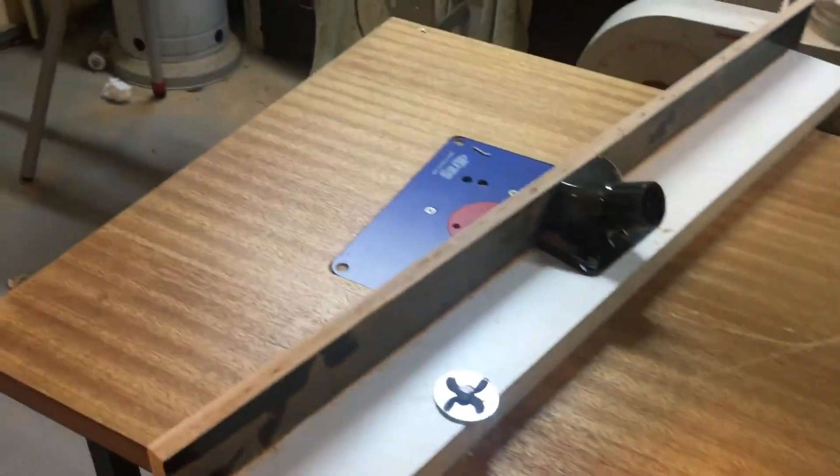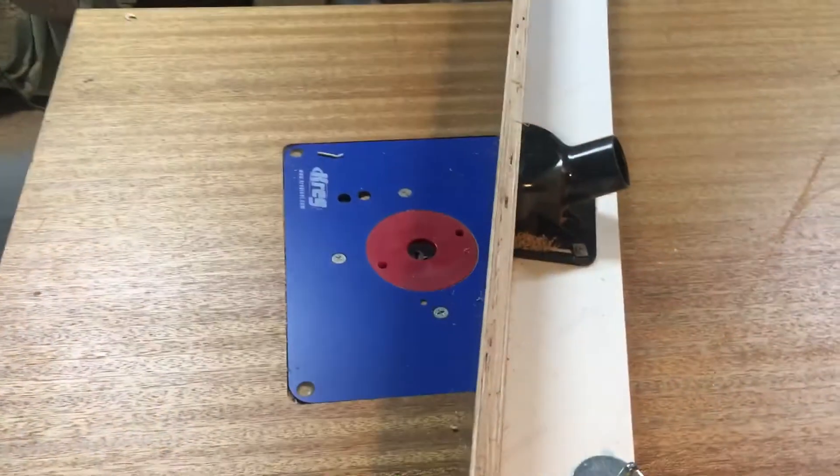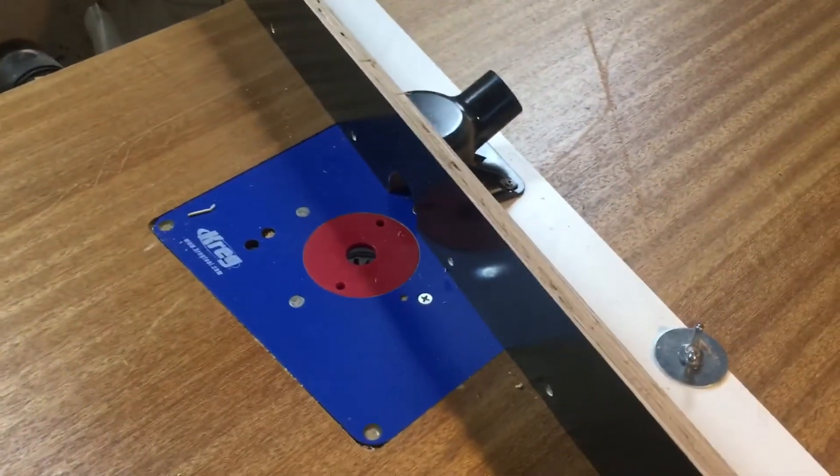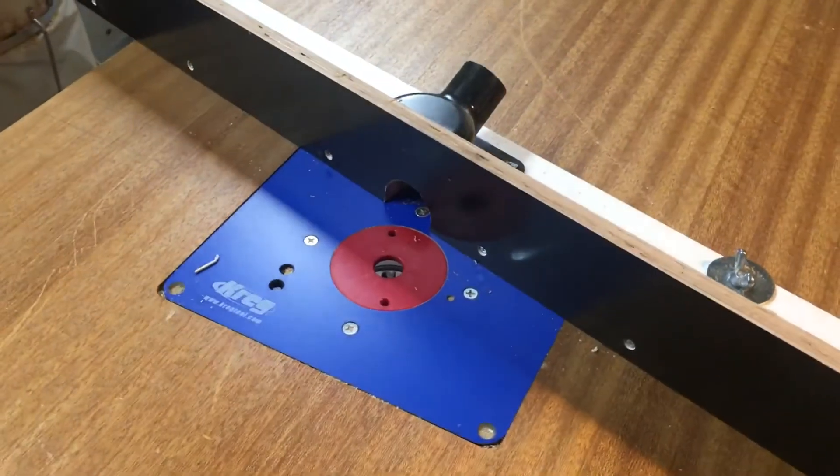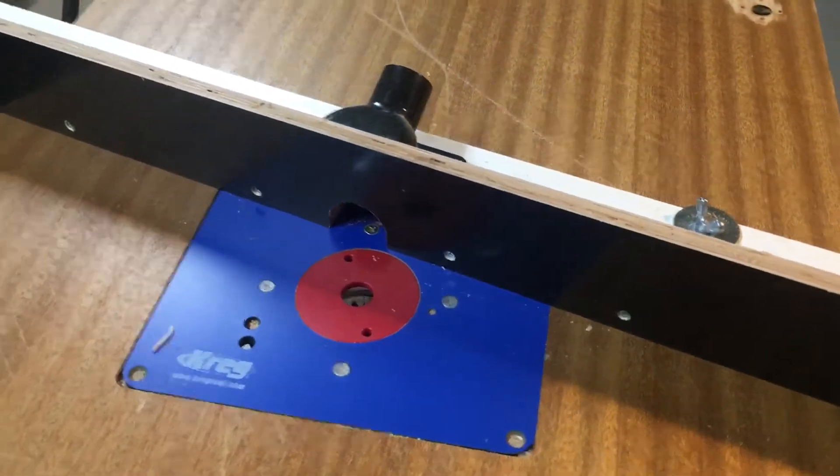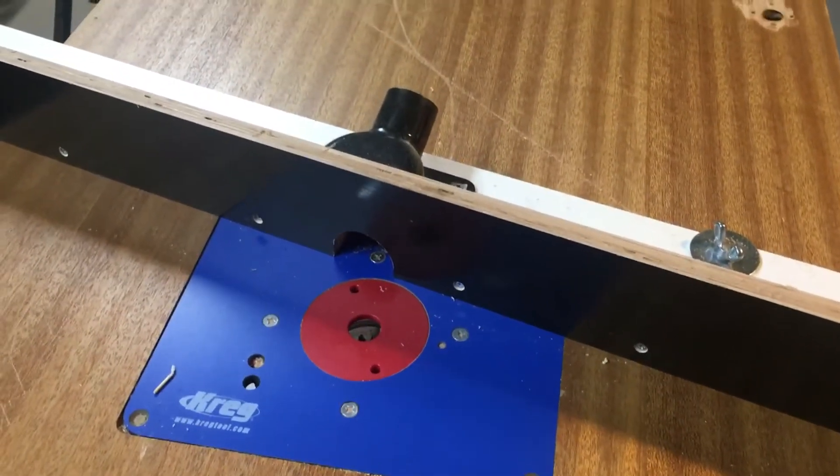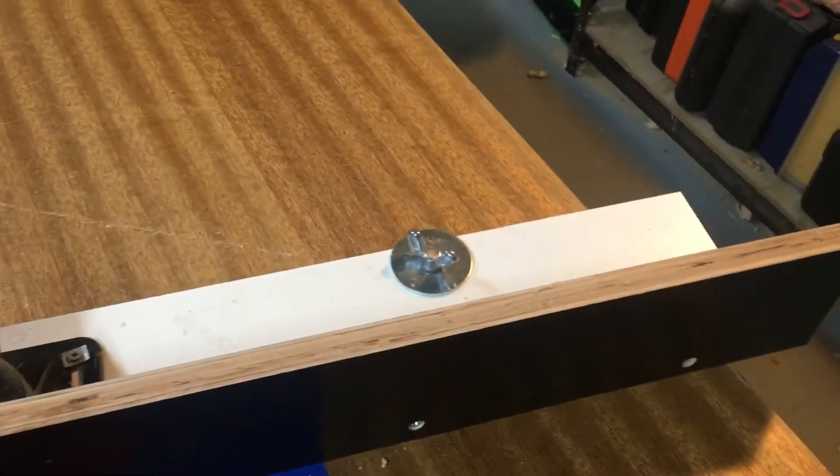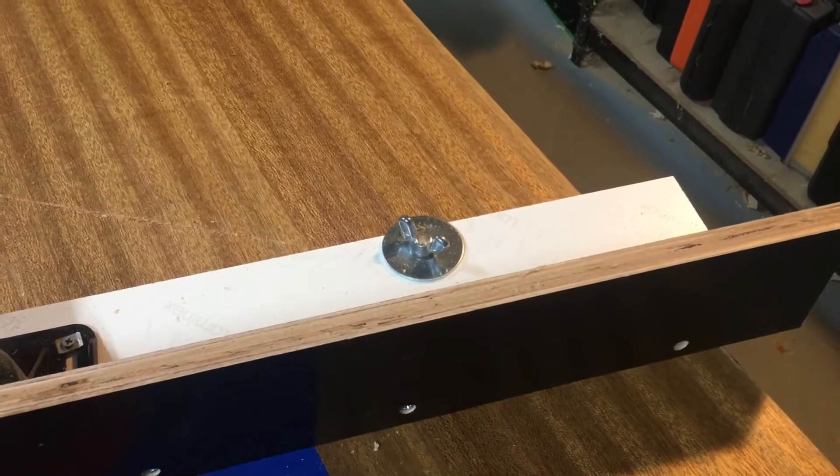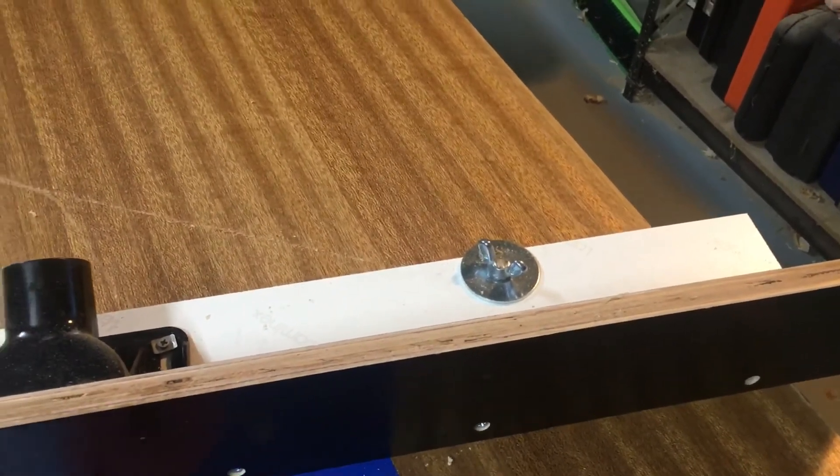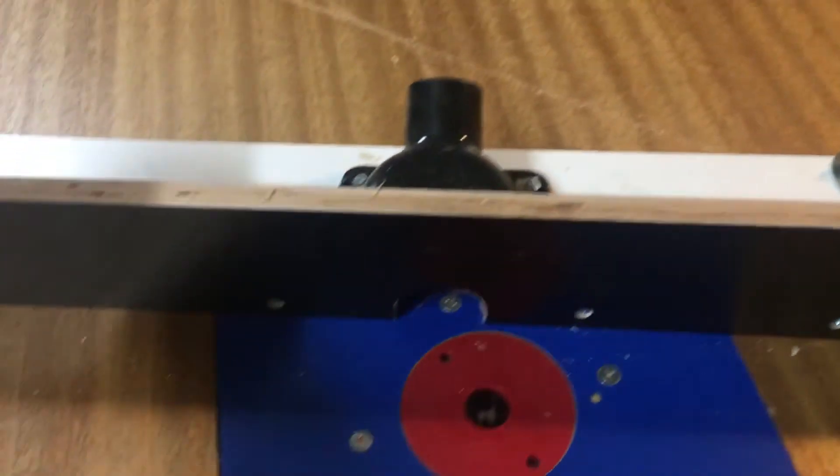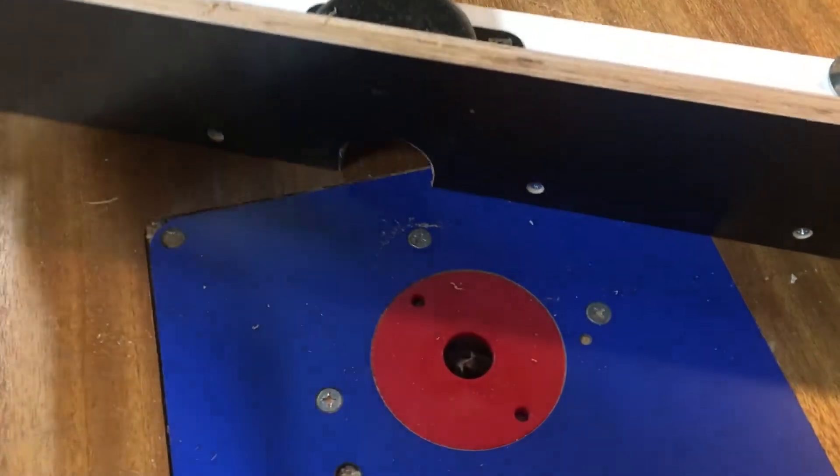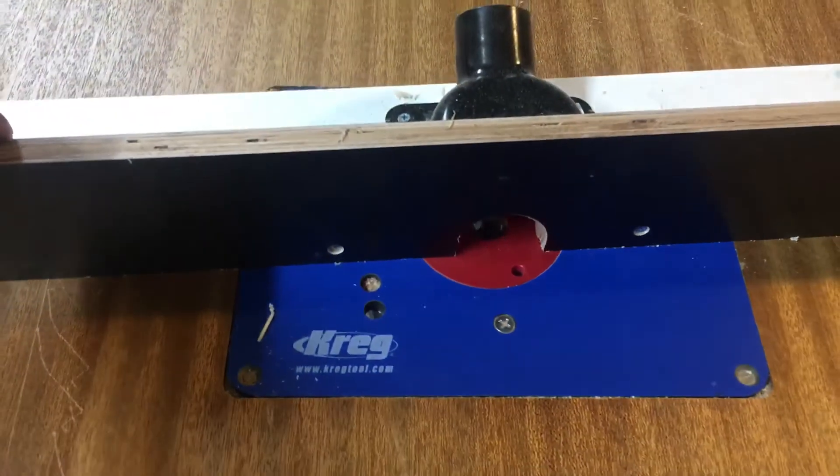As for the router, I had an existing router plate that I basically set into the tabletop. Then I used a system with a single hinge screw to allow me to set up the fence. In this case we have one screw that uses a nut from the underside and that allows me to pivot my fence forward and backwards on the table.